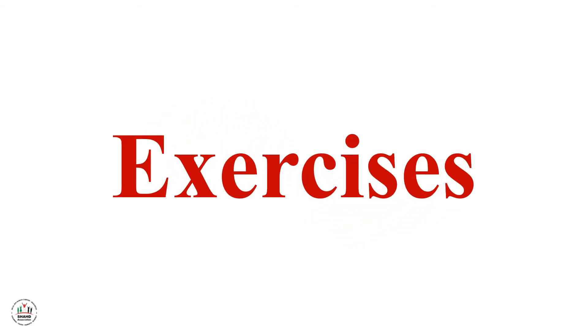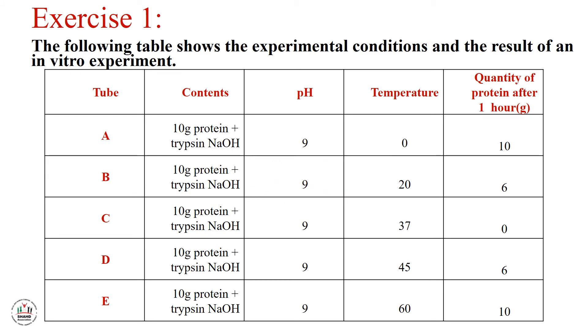Let's together solve this exercise. The following table show the experimental conditions and the result of an in vitro experiment - يعني خارج الجسم. Vivo داخل الجسم. فهنا عملنا experiment خارج الجسم لنشوف ال conditions اللي بيشتغل عليها الإنزيم. عندنا 5 tubes from A to E. عندنا ال contents هو نفسه من A to E، حتينا 10 gram protein، حتينا الإنزيم trypsin، وحتينا NaOH. pH is 9, basic medium.